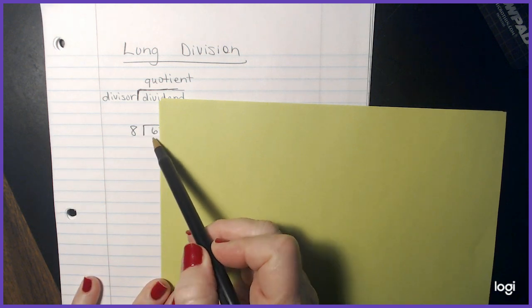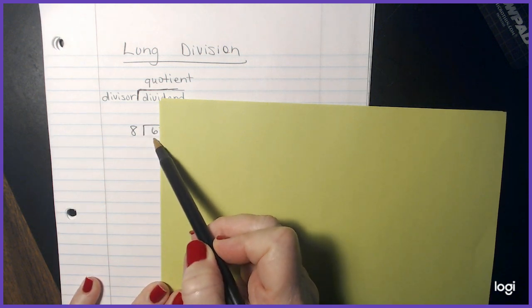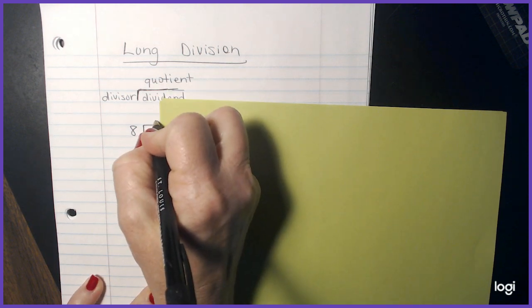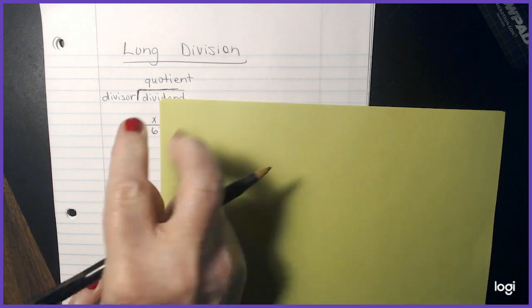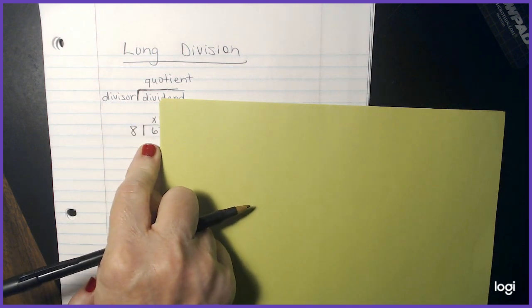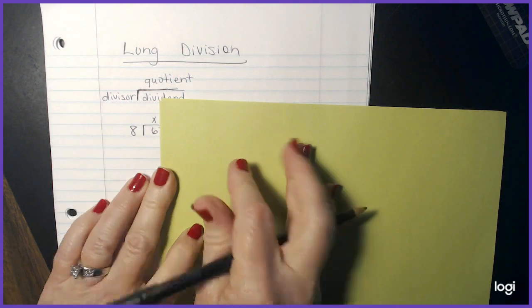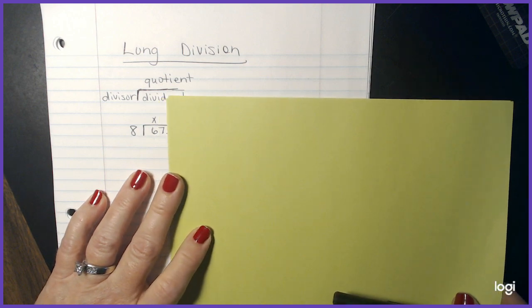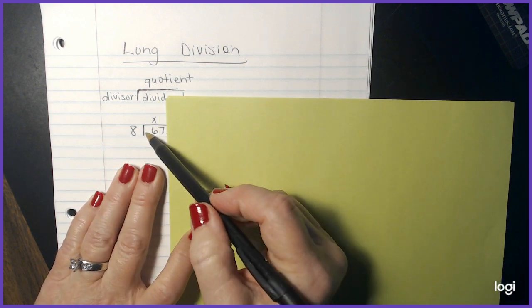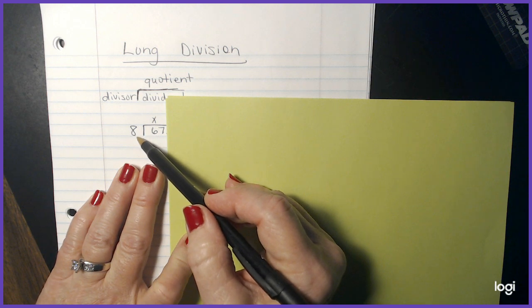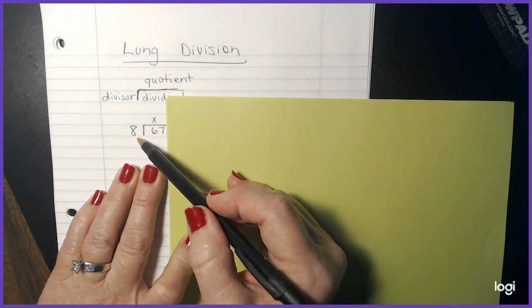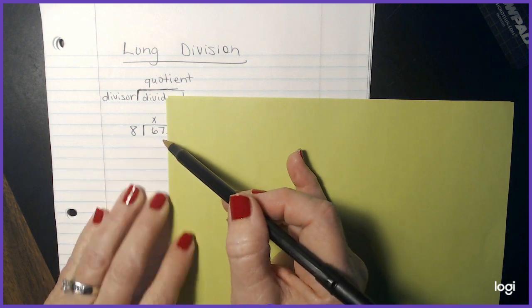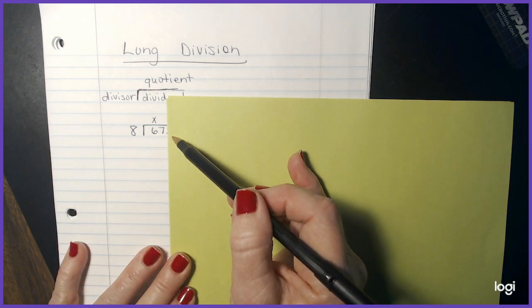If I look here, can the number eight go into the number six? Well, obviously it cannot because six is smaller than eight. So you could either put a zero, put an X, whatever it is you'd like to do in the front. I like to put an X because it's the front. Then I slide over and I look to see if eight can go into 67. You might have to look at your multiplication chart and keep going to see how close you can get to the number 67 without going over.